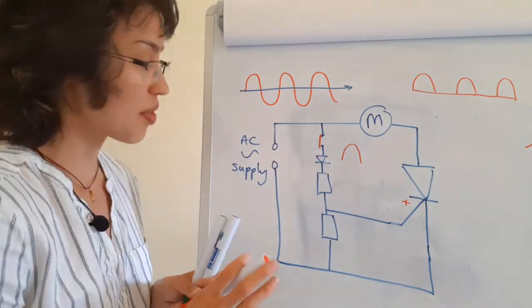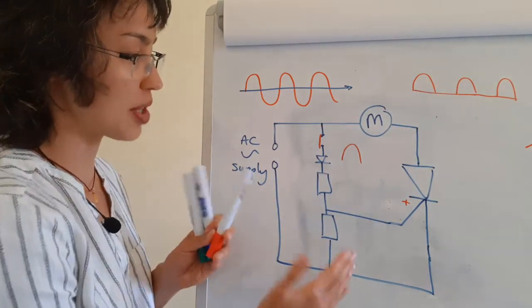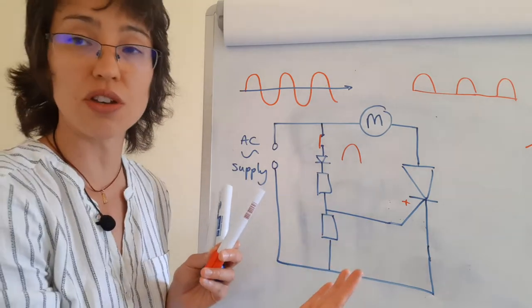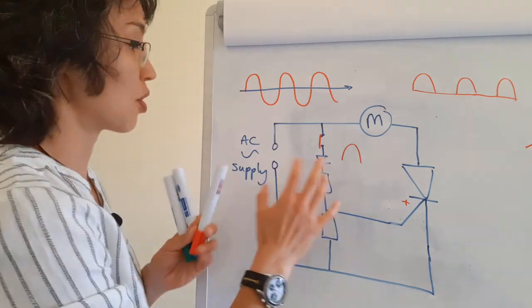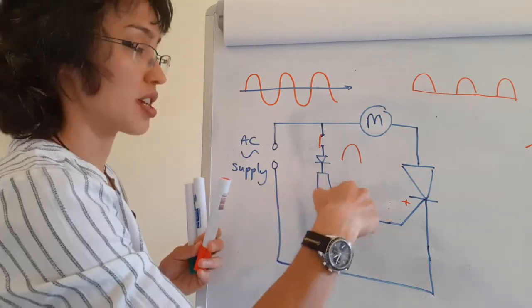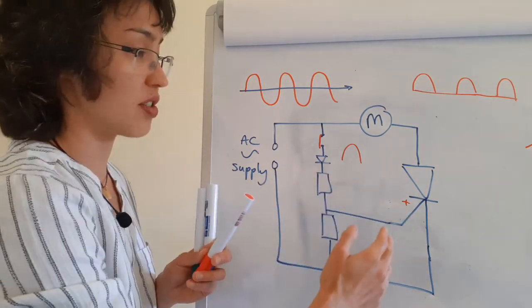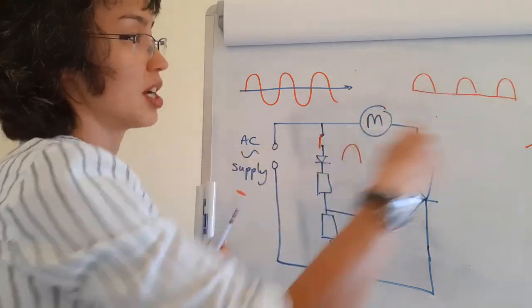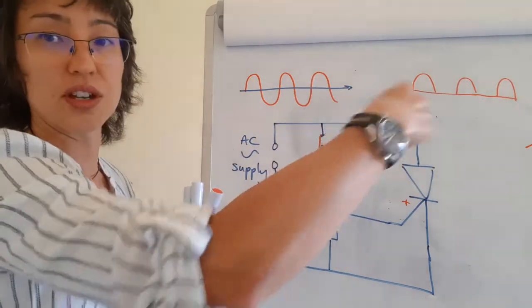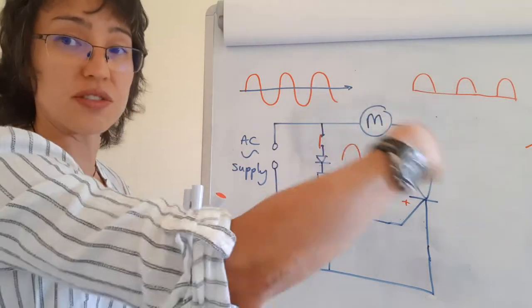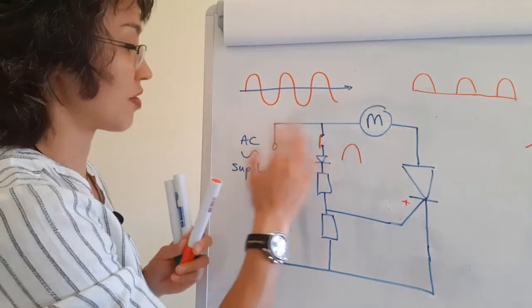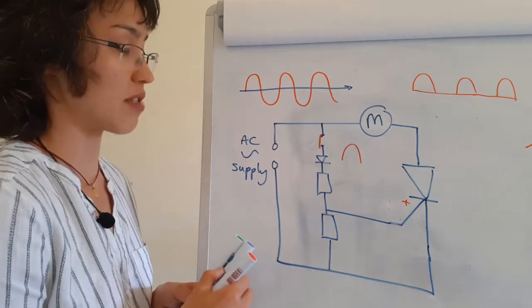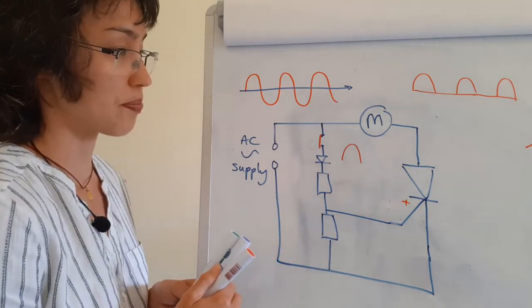And this also gives me a half-wave rectified output. So that's not very useful at the moment, because all we've done is switch a thyristor on at the same time as the positive part of our AC cycle, and that just gives us half-wave rectification.